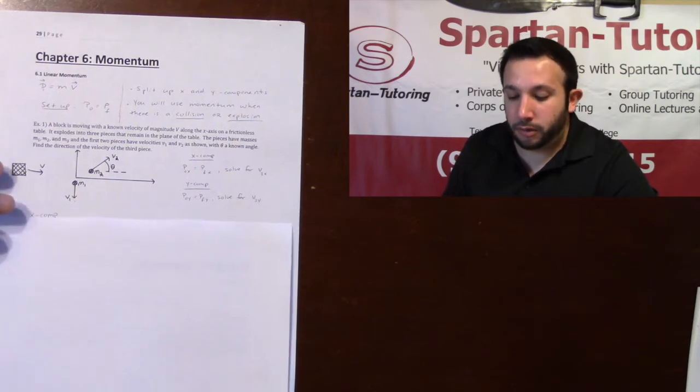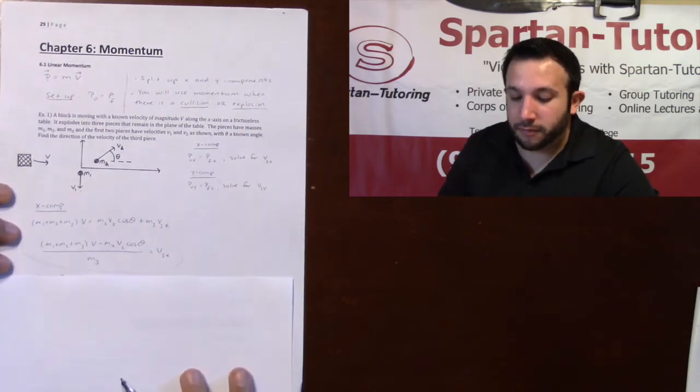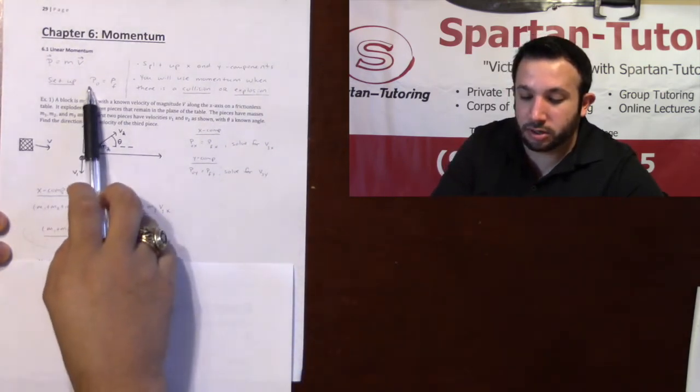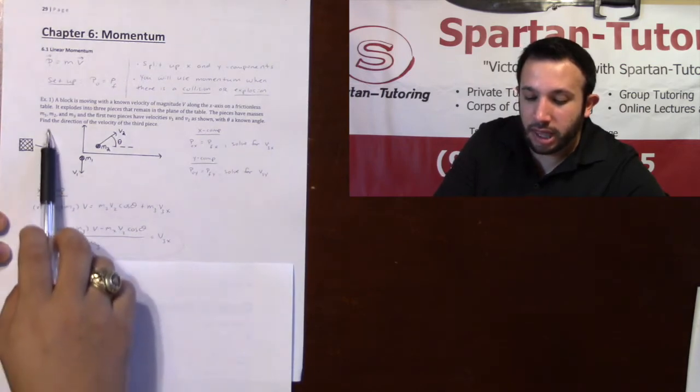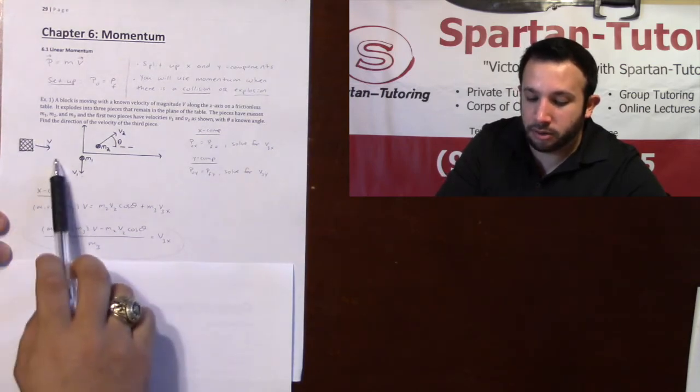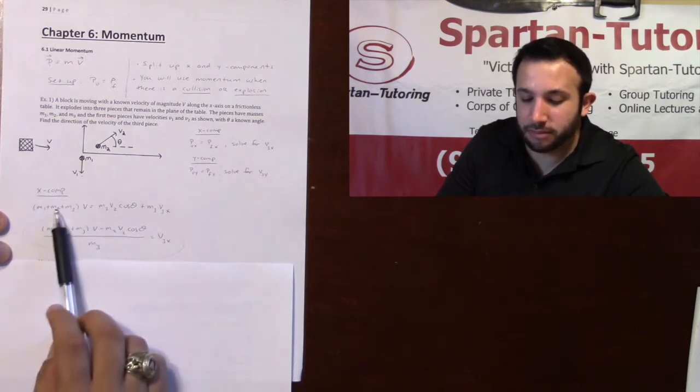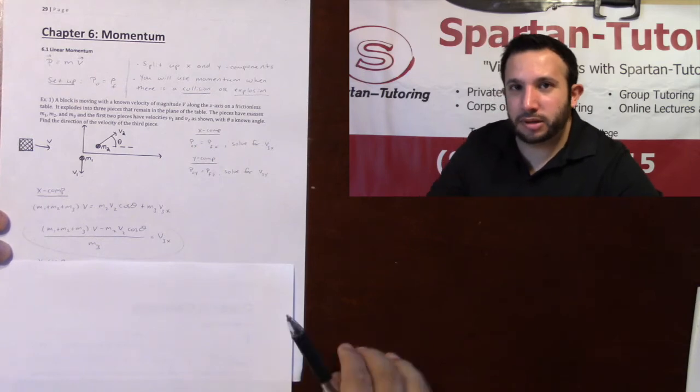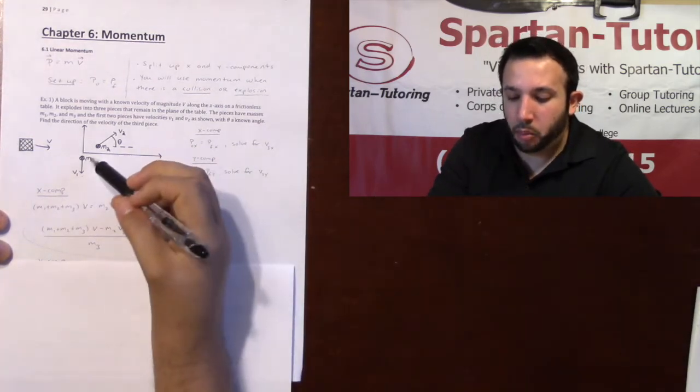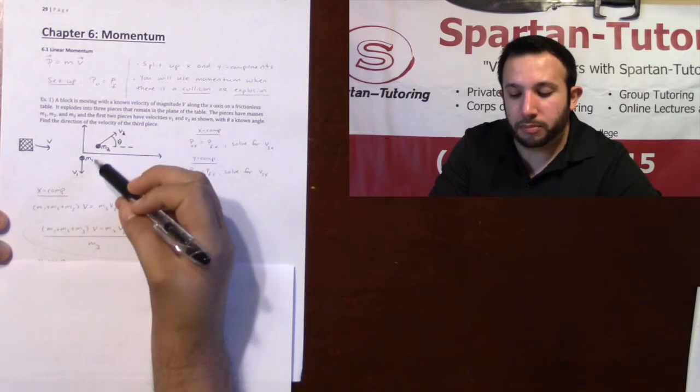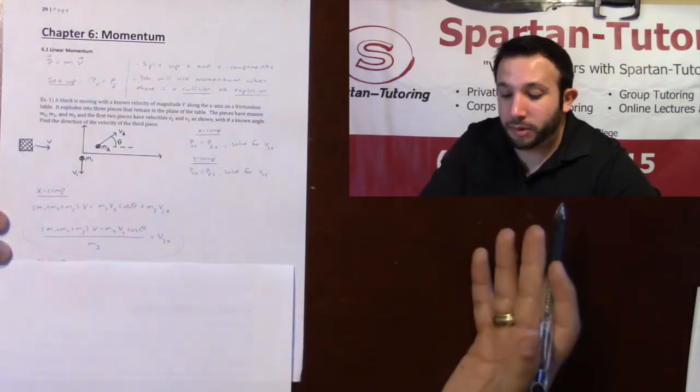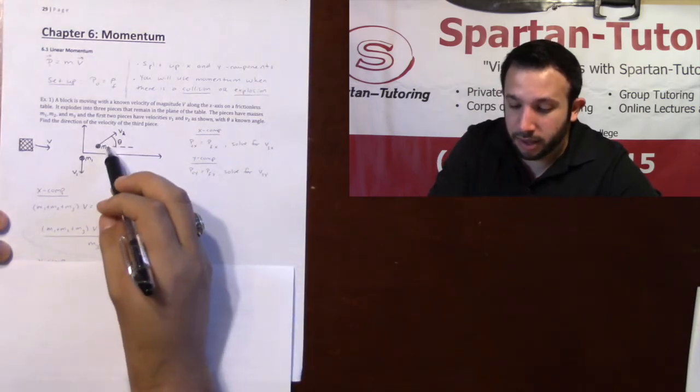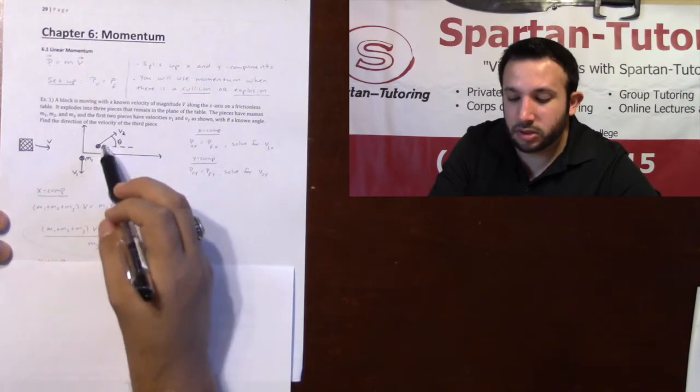If I want to find the x component of my third piece, you set your initial equal to your final. Initially it was all one block together - initially you had (m1 + m2 + m3) times that velocity v. But then it exploded into different pieces. Now m1 has no component in the x direction, so it has no final momentum in the x direction.